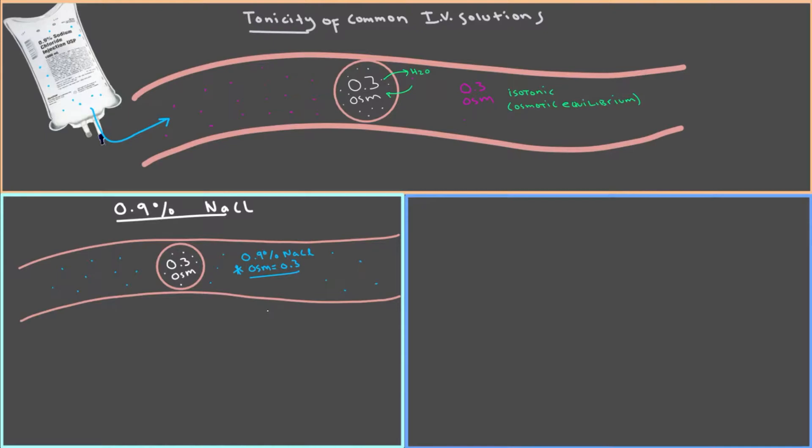So now let's use the steps we learned in a previous video to calculate tonicity. The first step was to look at the solute particles on the outside of the cell and see whether they could cross or not. But you guys might remember that sodium chloride in solution breaks up into positively charged sodium and negatively charged chloride. And if you have a charge, so you're positive or negative, you cannot cross the cell membrane.